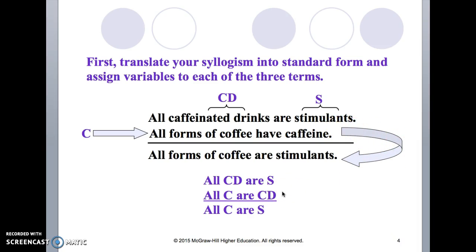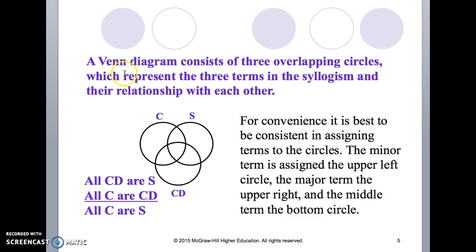The second step is to draw circles that represent the three categories we are investigating. This is how we do it.